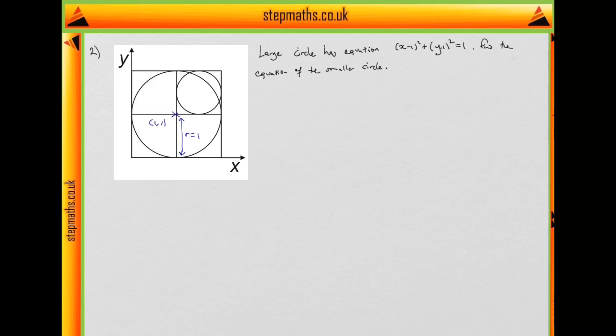That tells us the square has side lengths of 2, because this radius is 1 and this is 1. If this point at the origin is (0, 0), then we have the corners at (2, 0), (2, 2), and (0, 2).